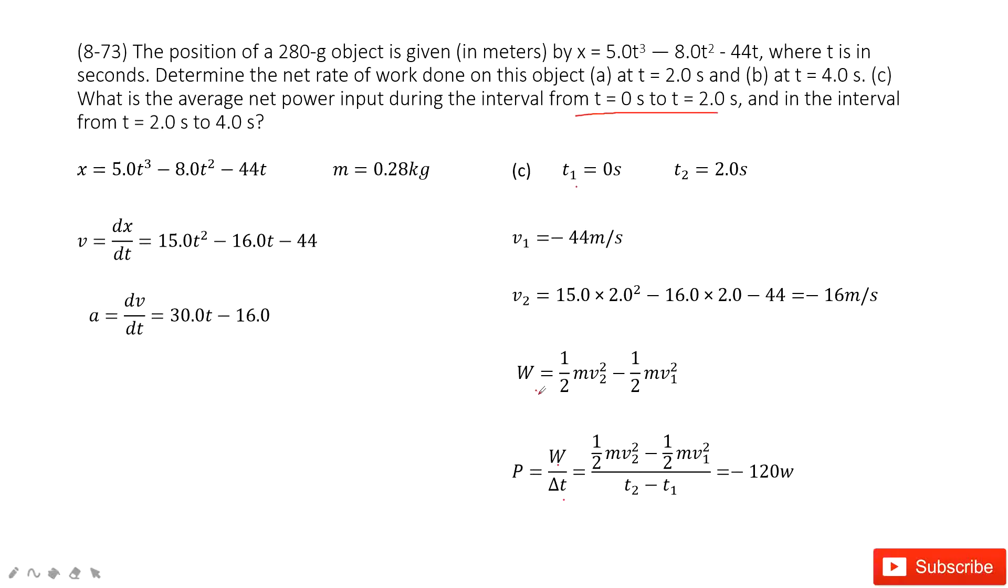The net work, we consider work energy principle. The change of the kinetic energy equals to the work. So at this initial time, we get its velocity, and the final time, we get its final velocity. And then we can get the change of kinetic energy. And this change of kinetic energy is just the work. So power P equal to work divided by time taking. Then we can get the final answer.